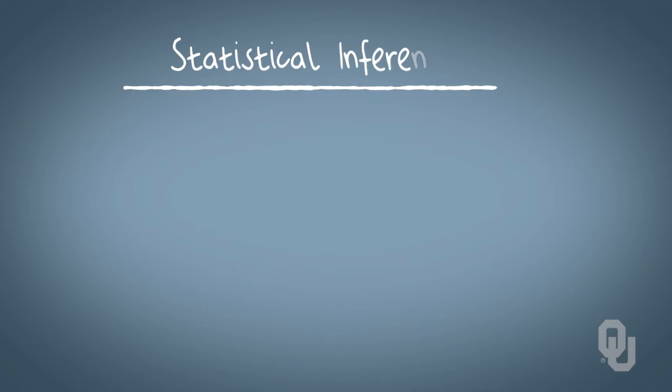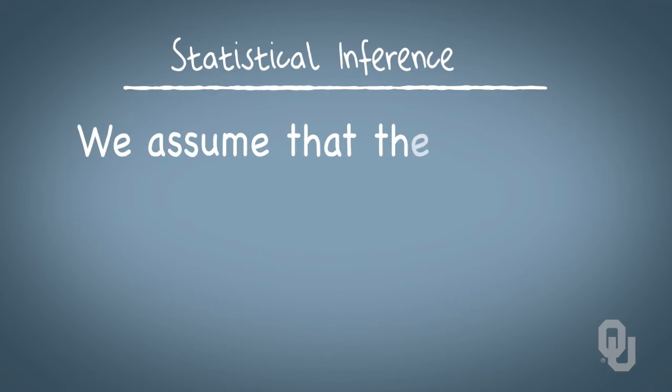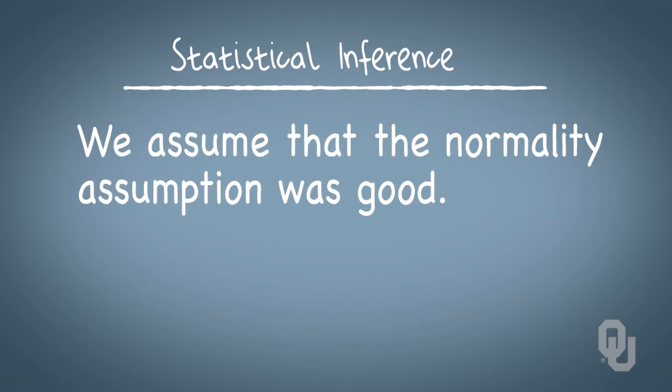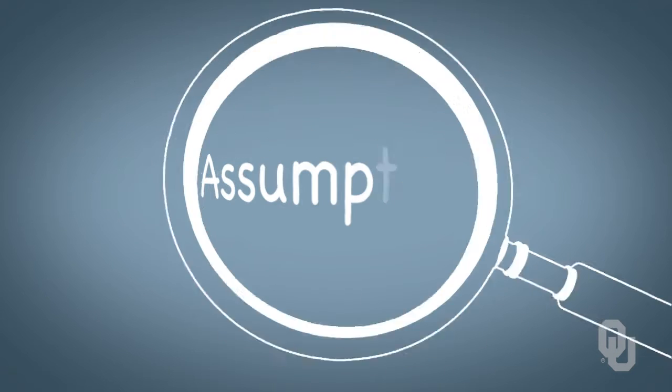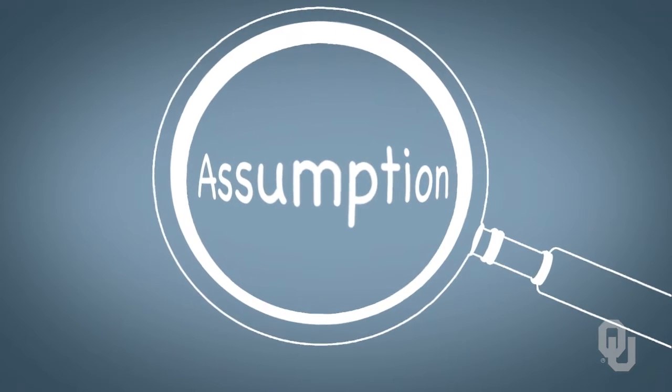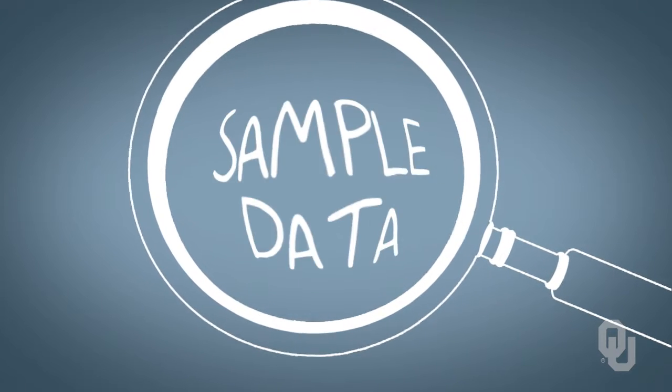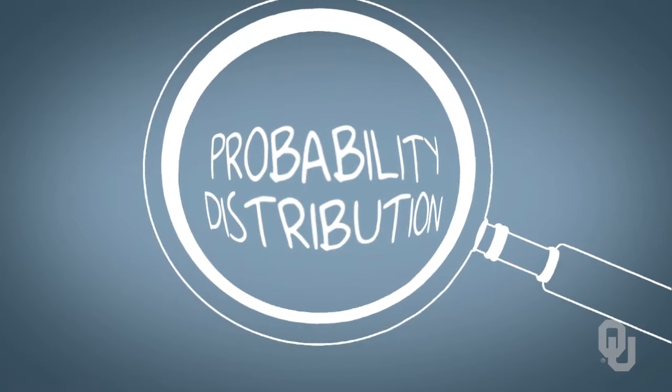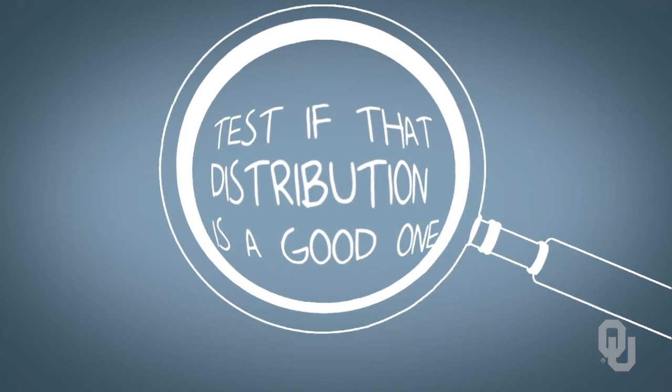And during our conversations of statistical inference, we would assume that the normality assumption was good. We never really looked into any of these assumptions. Let's rectify that issue in this unit and learn how to turn sample data into a probability distribution and then test if that distribution is a good one.